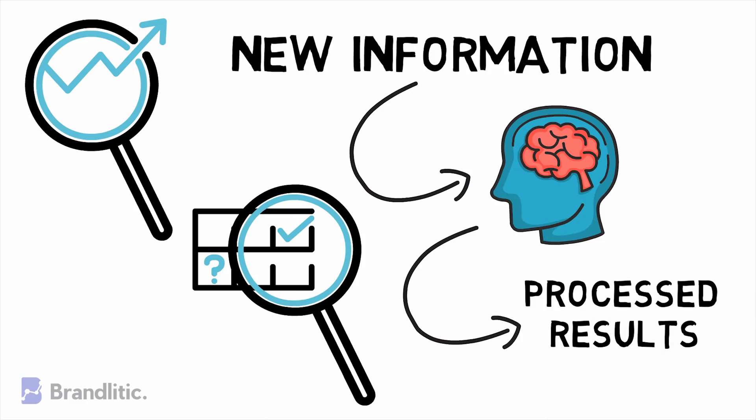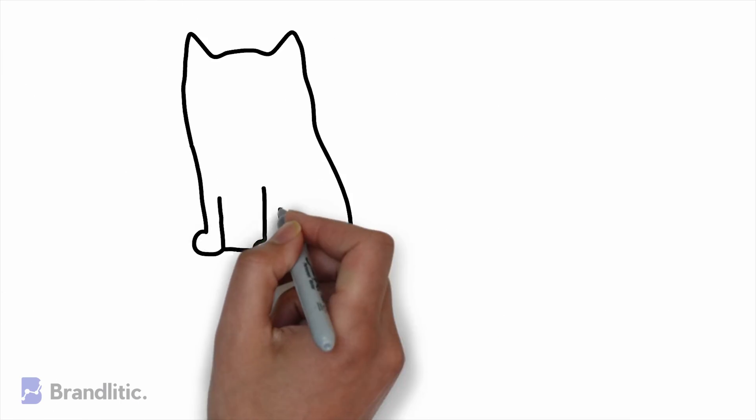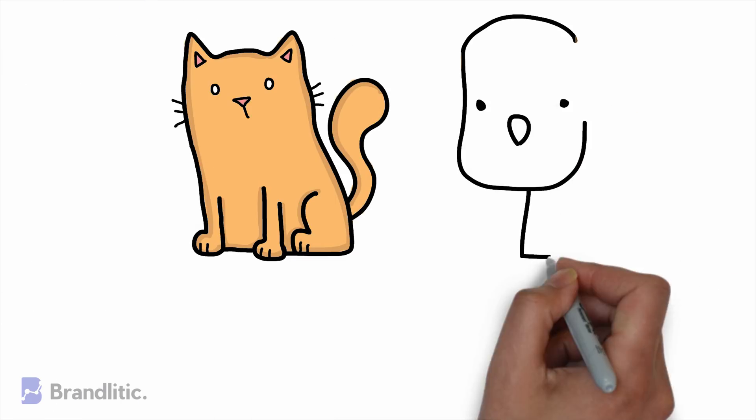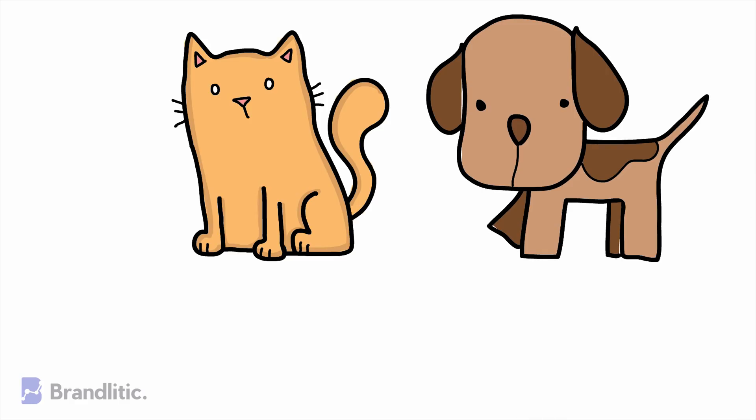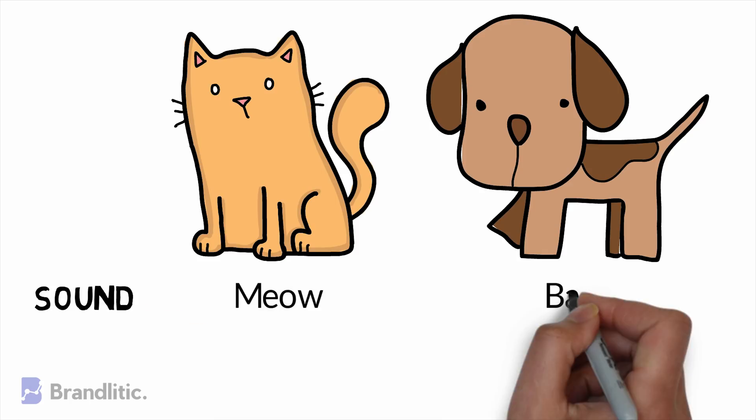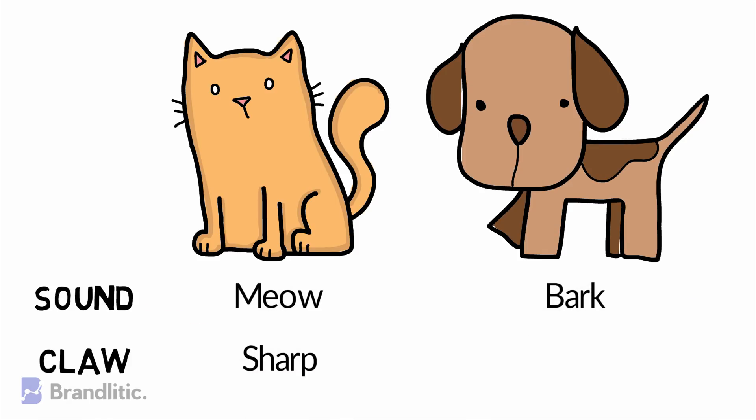Next, let's take an example of understanding how deep learning is different from machine learning. Suppose we want to build a machine that differentiates between a cat and a dog. If we do it by machine learning, we then need to tell features based on which the two can be differentiated. These features can be the sound they make or the type of claws they have.